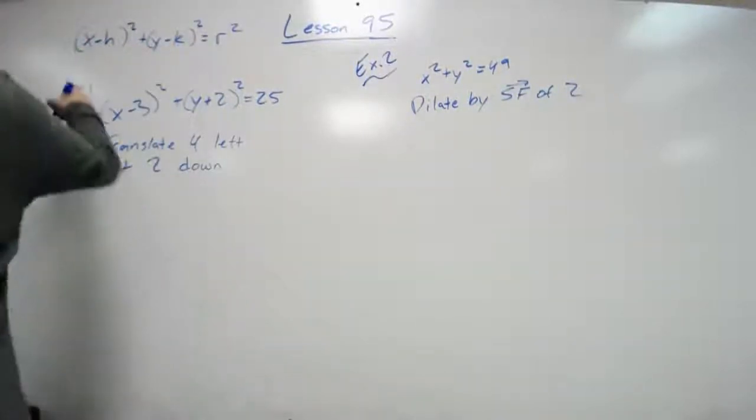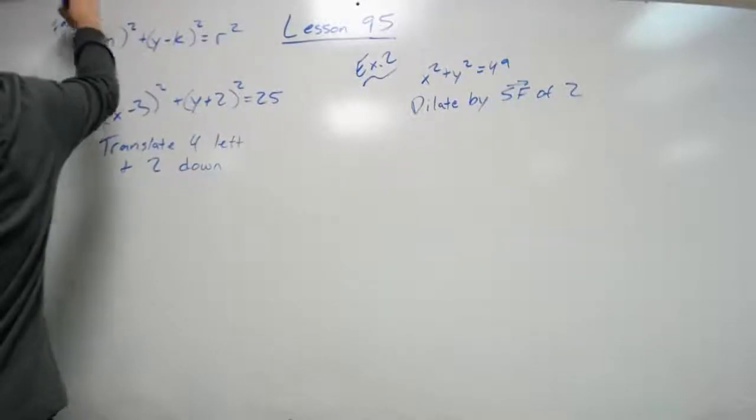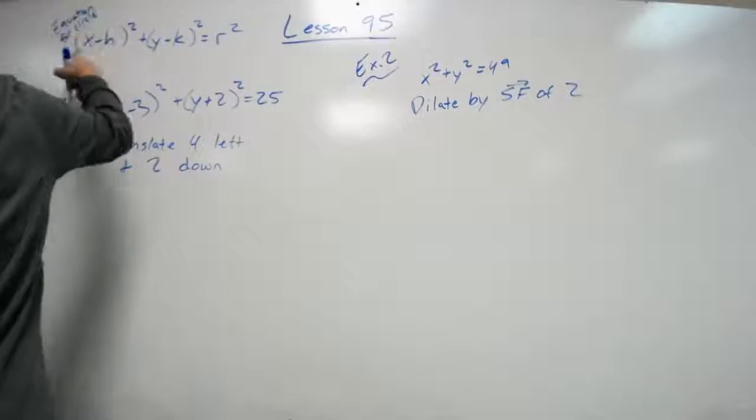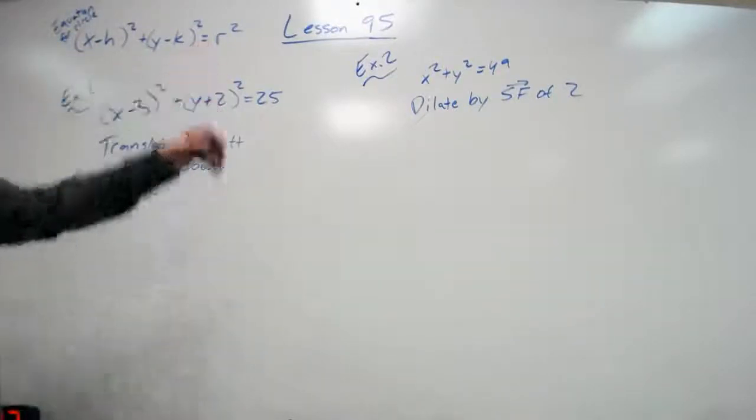Now just a refresher, the equation of a circle, or equation to graph a circle is x minus h squared plus y minus k squared equals r squared.